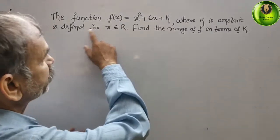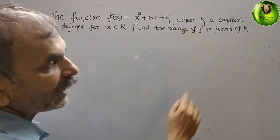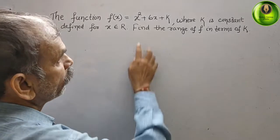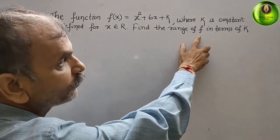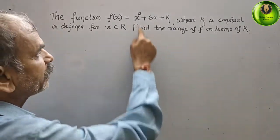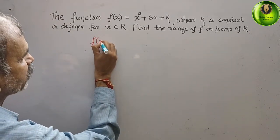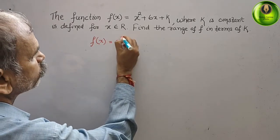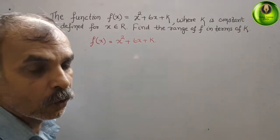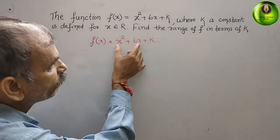The function f(x) = x² + 6x + k, where k is a constant, is defined for x belonging to the real numbers. We need to find the range of f in terms of k. We write the function first: f(x) = x² + 6x + k. Now we go for the completing the square method.